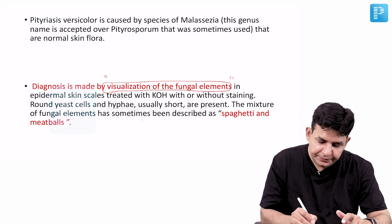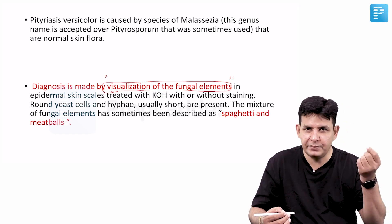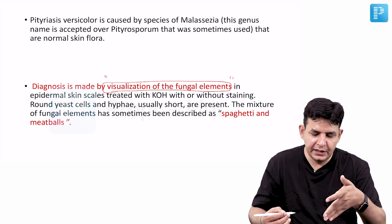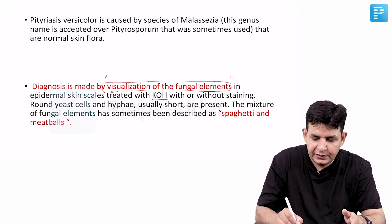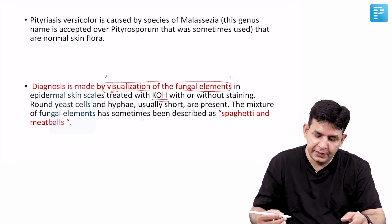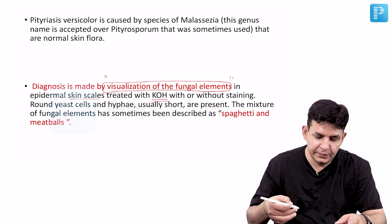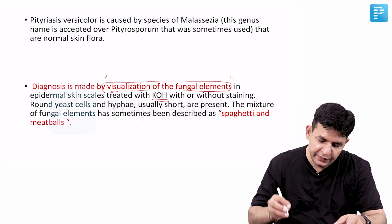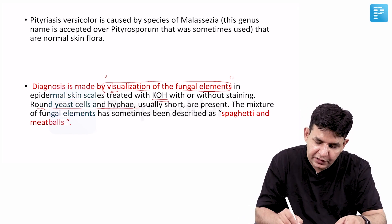To visualize these fungal elements, you take the skin scrapings. In this particular case you take the scales — epidermal skin scales — and treat them with KOH, around 10% KOH. After some time, what you observe under the microscope are what are termed fungal elements. In this particular scenario, you will get round yeast cells and hyphae which are usually short.